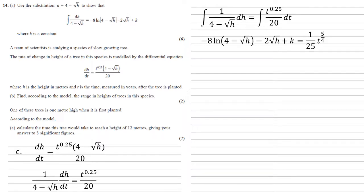And this is equal to the integral of t to the 0.25 over 20 dt. Well on the left-hand side, we know what the integral of this is, we did it in part A. On the right-hand side, we've got t to the 0.25, so raise the power by 1 to give us 1.25 or 5 over 4, divide by the new power to give us 1.25 t to the 5 over 4.